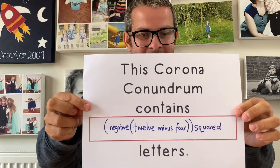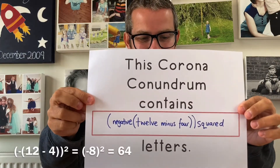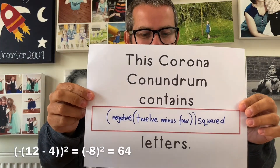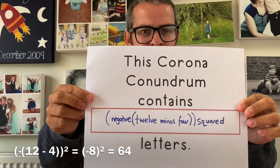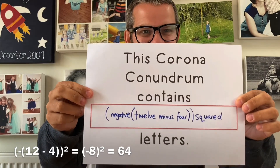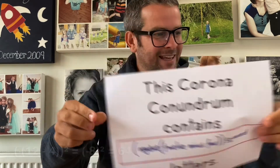Or maybe you tried to create some sort of mathematical calculation — 'This corona conundrum contains negative 12 minus 4 squared letters.' That's 64 letters. Can't wait to see all of your creative entries.